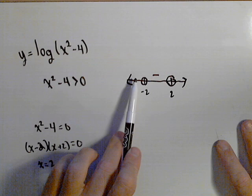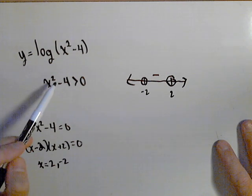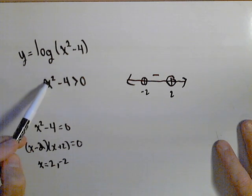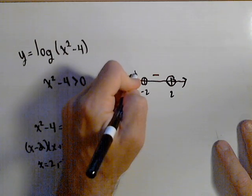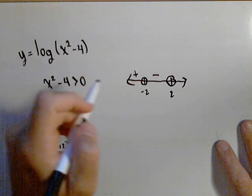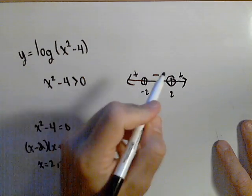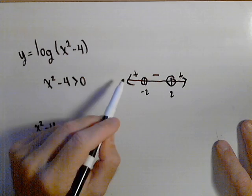Let's pick a point to the left, say negative three. If I put negative three in and square it, I get positive nine minus four is positive. I don't care what it comes out to be. I just care if it's positive or negative. If I do positive three, I also get a positive number. And so now from here, I can get my domain.